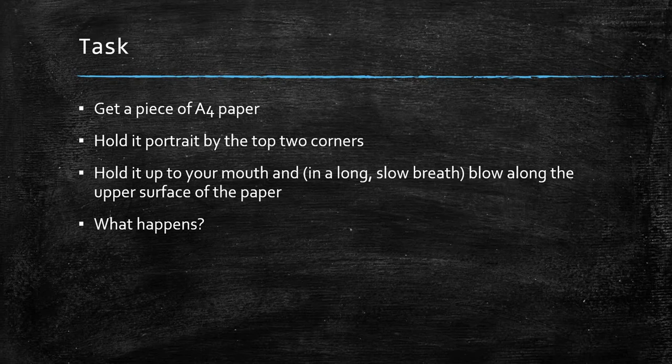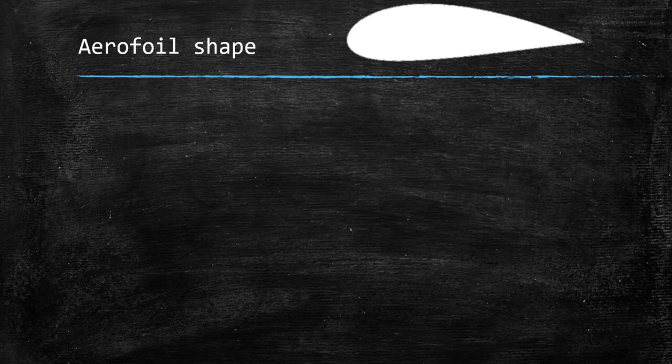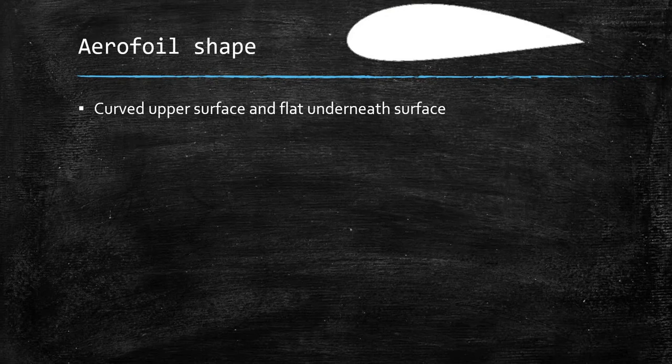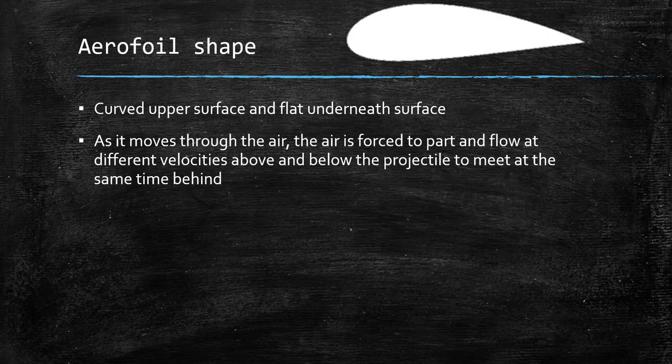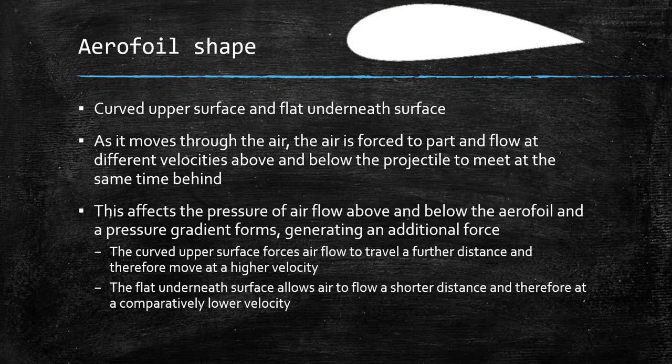You should find that as you blow over the paper, the paper will lift up. While you're just holding it up against your mouth it will hang down, but as you blow over the top, the paper will actually lift up. This is because you are creating an aerofoil shape with that piece of paper — a curved upper surface and a flat underneath surface. As this shape moves through the air, the air is forced to part and flow at different velocities above and below the projectile in order to meet at the same time. The curved upper surface forces airflow to travel a further distance, so the flat underneath surface has less distance to travel and therefore the air travels at a comparatively lower velocity.